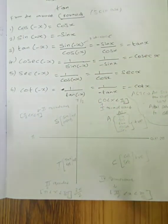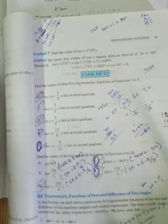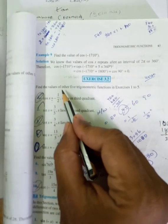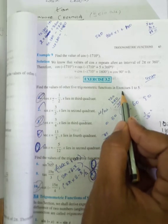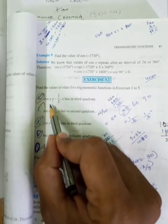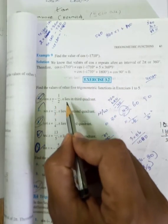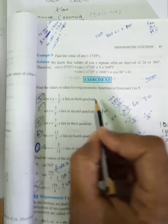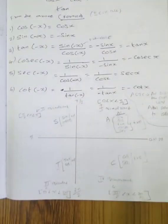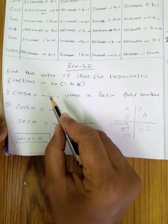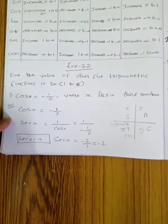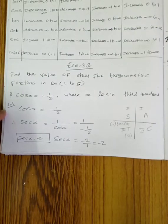Exercise 3.2 — first question: find the value of other trigonometry functions. x is 1 to 5. First question: cos x equals minus 1 by 2, where x lies in the 3rd quadrant.